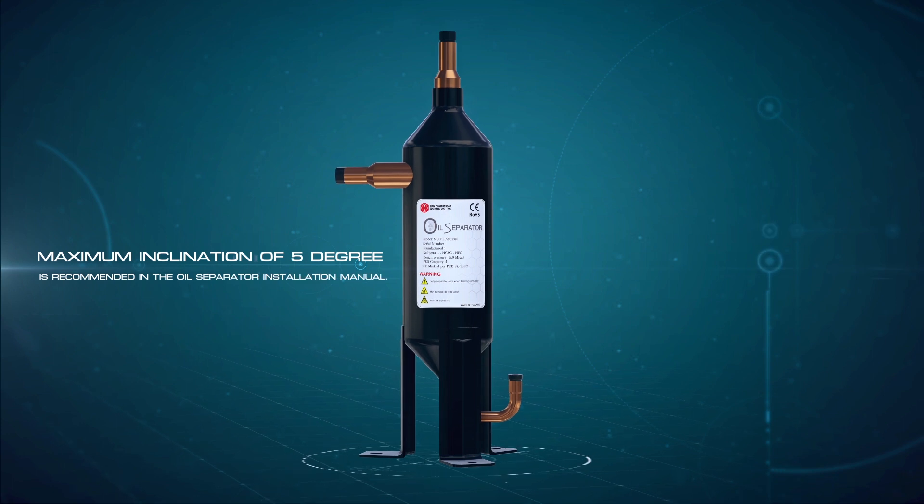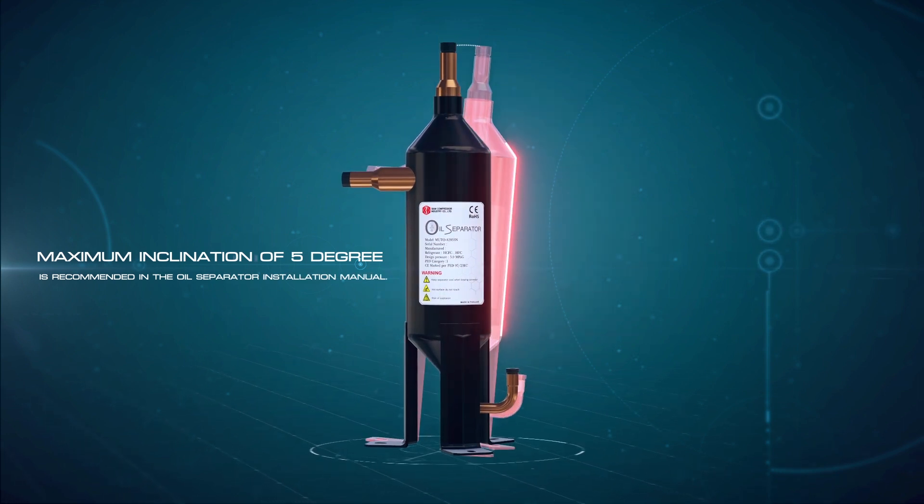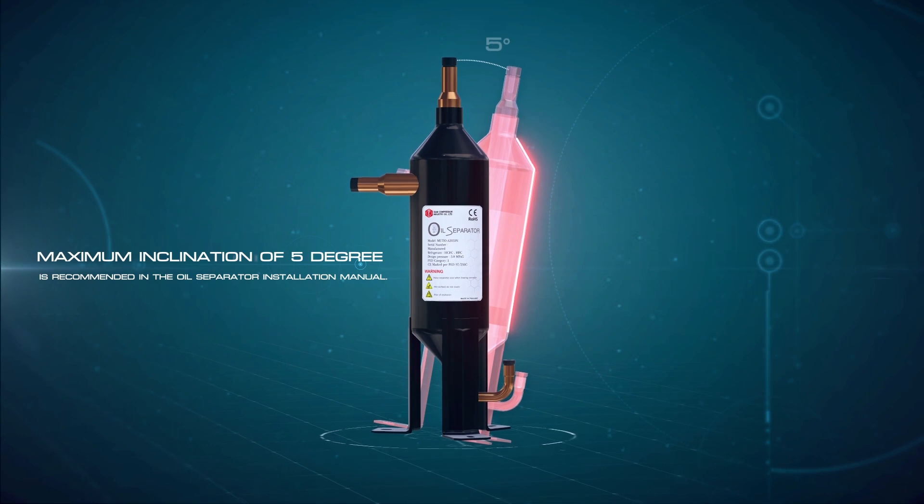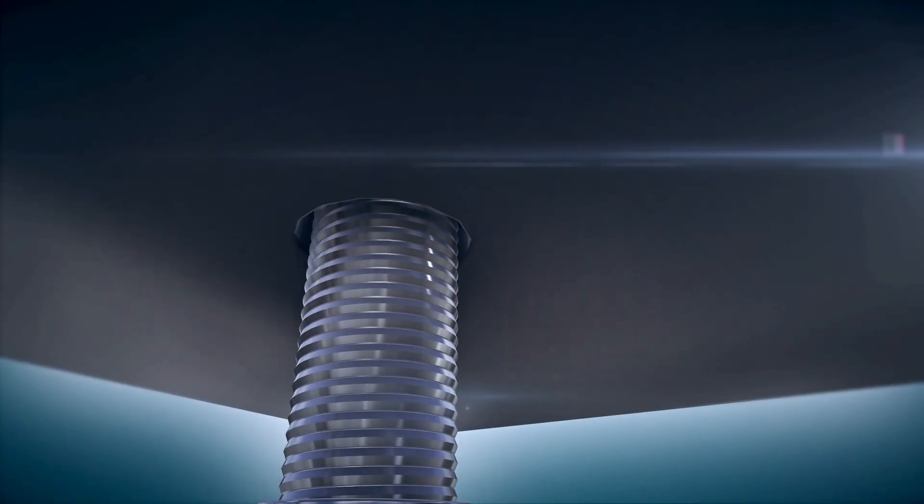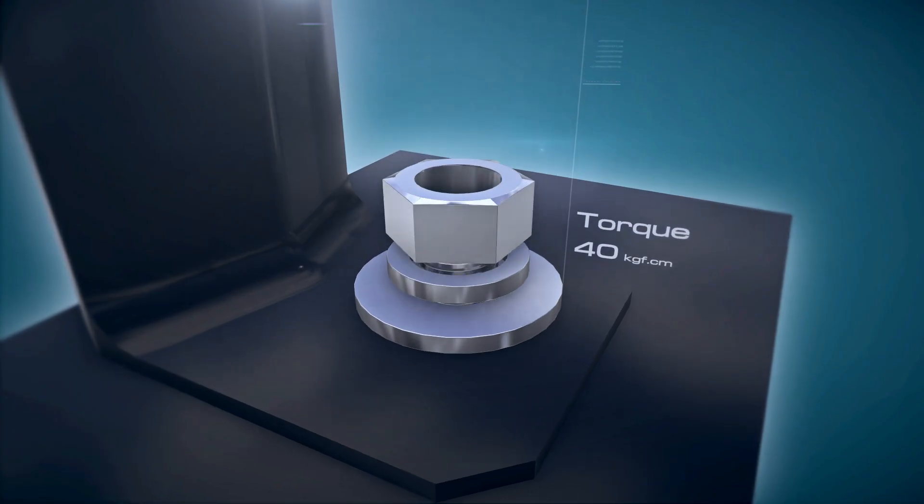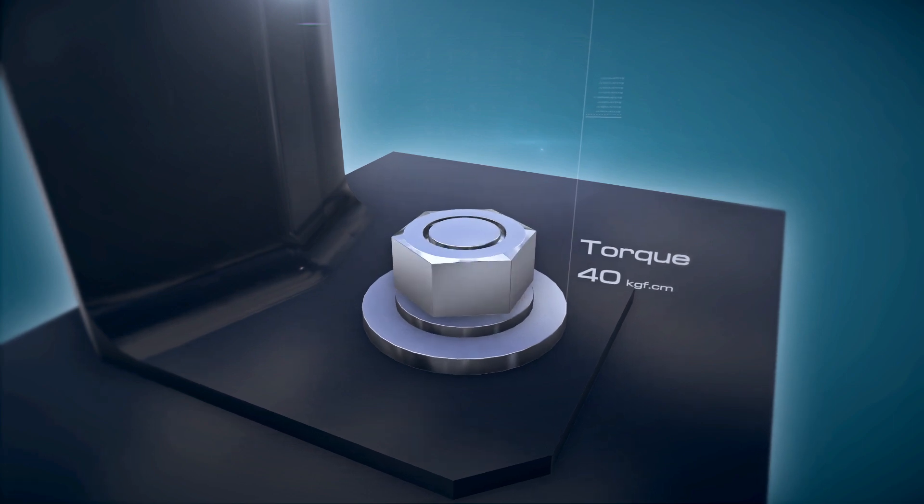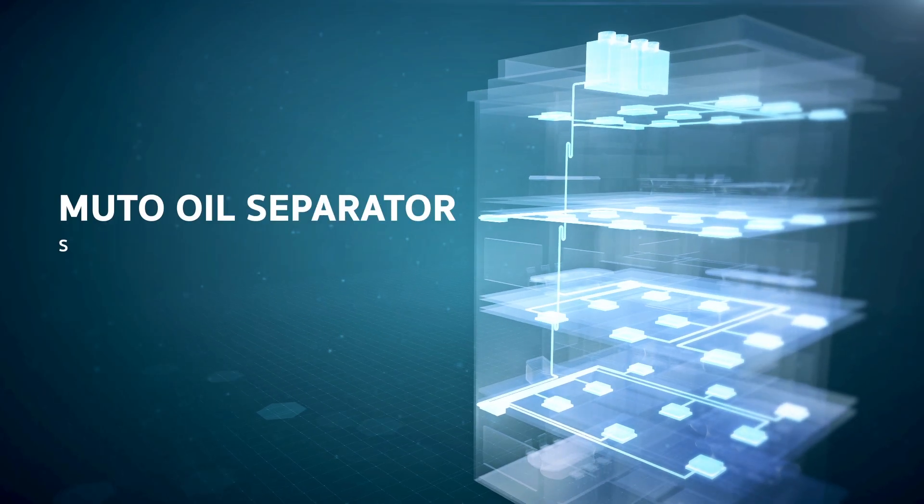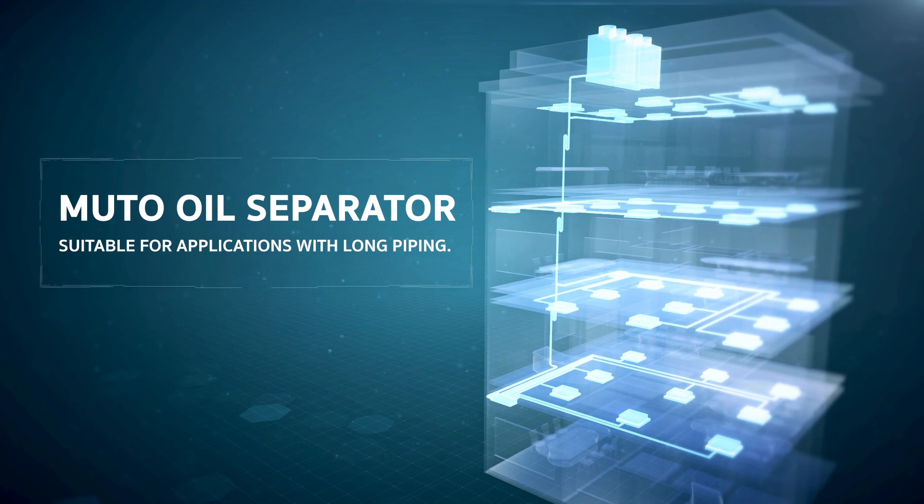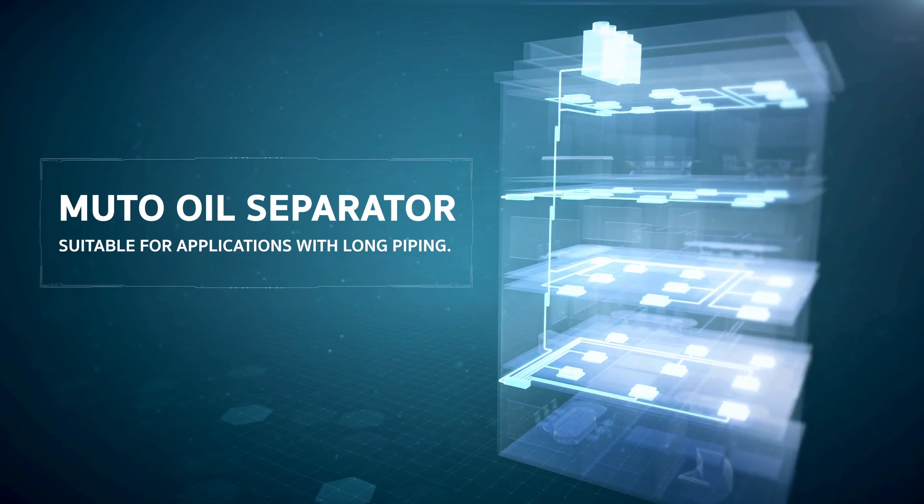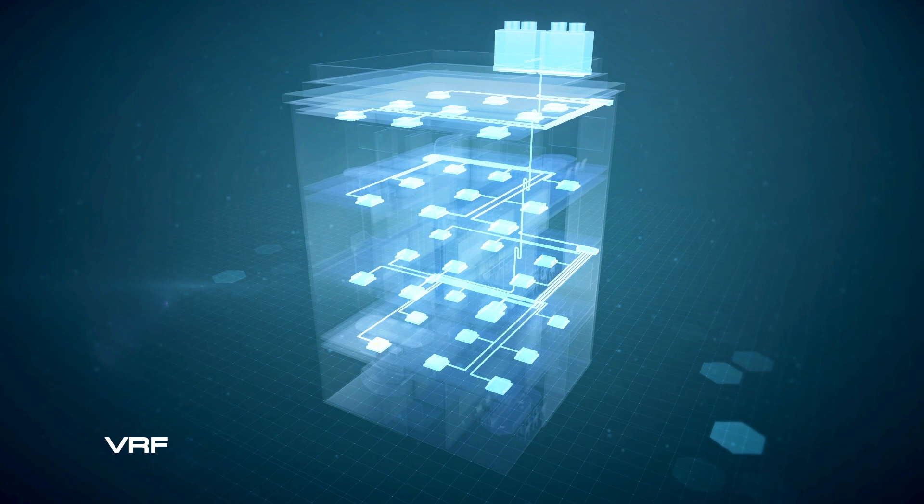Maximum inclination of 5 degrees is recommended in the oil separator installation manual. Specified screw torque on mounting is 40 kgf cm. The MUTO oil separator is suitable for applications with long piping, for instance VRF air conditioning systems.